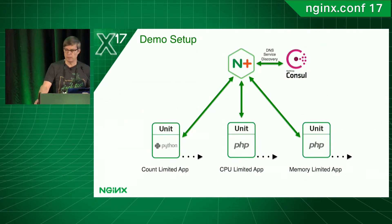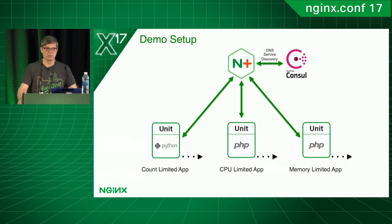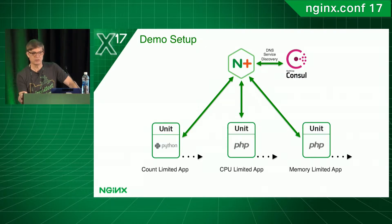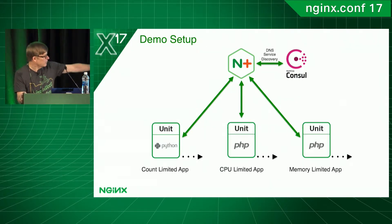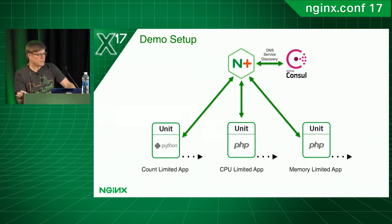I'll be showing a demo in a few minutes. This is the basic config — I've got NGINX Plus at the front end, load balancing three sets of upstreams. They're all running NGINX Unit. The count-based health checks and the ones limited by how many requests can be processed at a time are running Python. The other two — CPU and memory utilization — are running PHP.